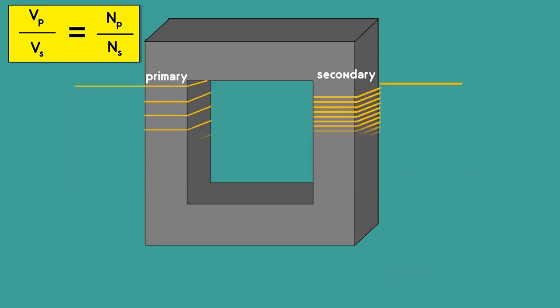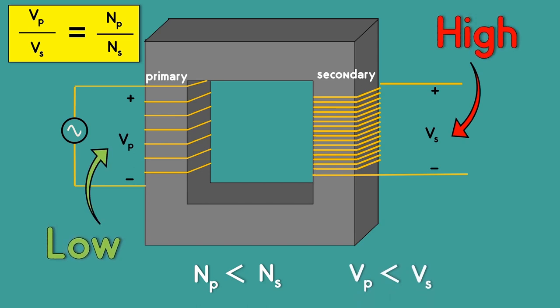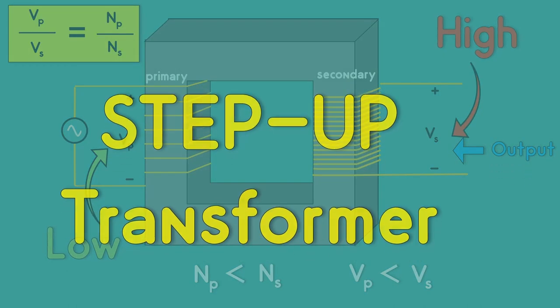If the number of turns in the primary winding is less than the number of turns in the secondary, then the secondary side voltage will be higher than the primary side voltage. Since this kind of transformer raises the output voltage, it is called the step-up transformer.